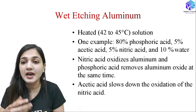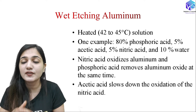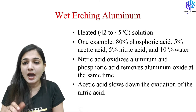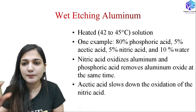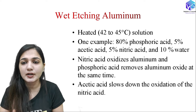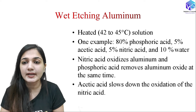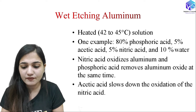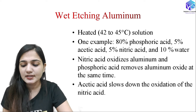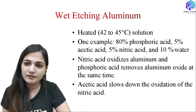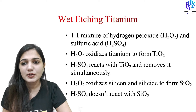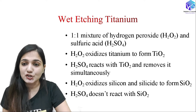Acetic acid is used to slow down the reaction so that the reaction does not proceed very fast. I want control over this process — I want to remove a particular layer to a particular depth, and I can get that control with the help of acetic acid. So acetic acid slows down the oxidation caused by the nitric acid.